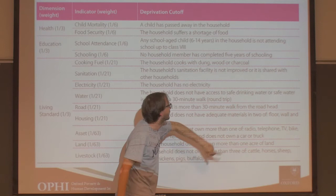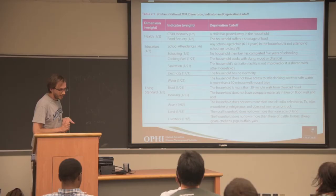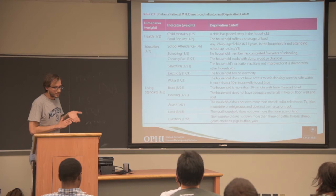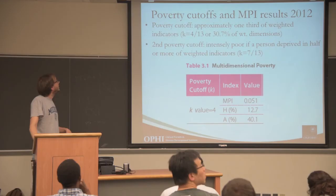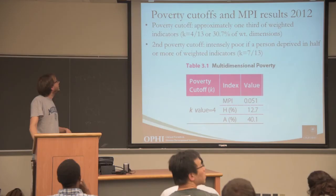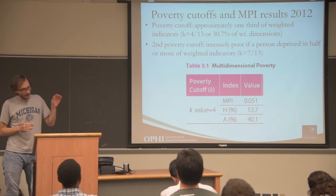The weighting structure is nested: each dimension has weight one-third, and the two indicators in health and education each have weight one-sixth. For the living standard dimension, the first six indicators have one-seventh of the dimension's weight, and the remaining one-seventh is shared equally among the last three indicators — roads, livestock, and land. For the poverty cut-off, Bhutan decided that people deprived in at least 30.7% of weighted indicators are considered poor, with a second cut-off of more than 50% to identify the intensely poor.